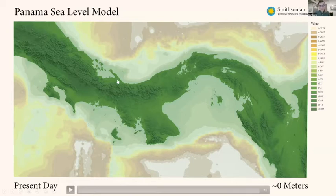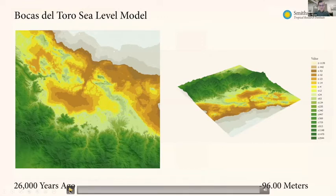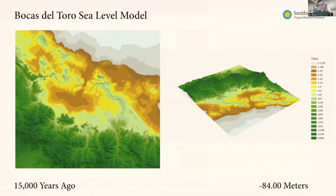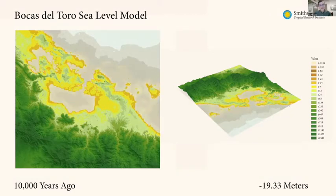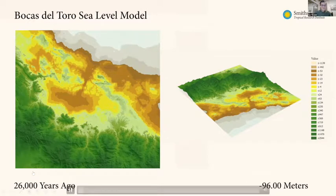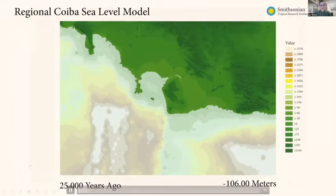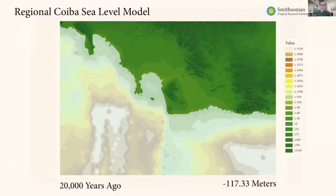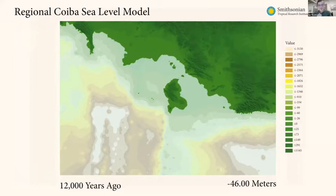I'll point out two locations shown in animations going forward: Bocas del Toro and Coiba. In the Bocas del Toro region — same conventions as the previous graph — as we move towards the present, the ocean rises and fills in the lower elevation flatland. You can see some of the ancient riverbeds within the elevation model. Then here we have the island of Coiba: same conventions, with peninsulas turning into single islands in the modern day.